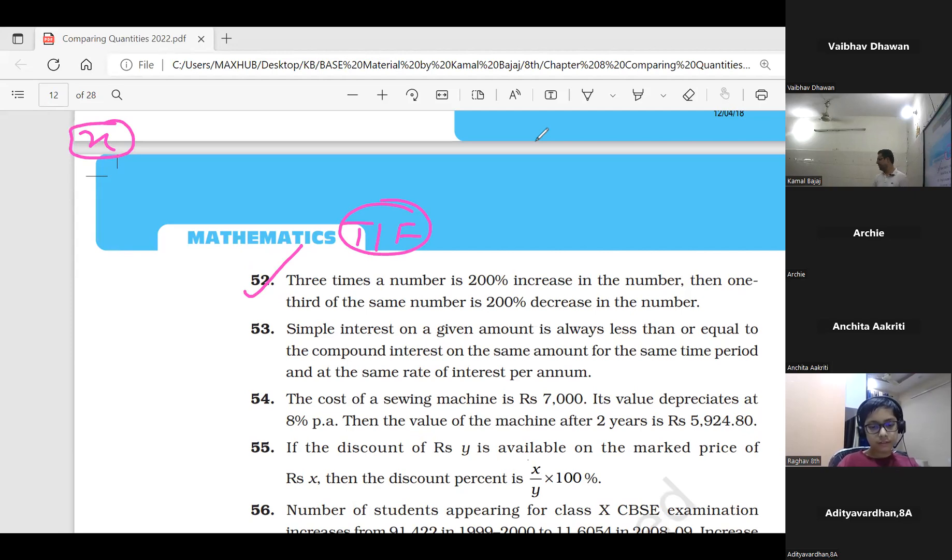Then three times x will be 3x, so the change in the number is 2x. What is the percentage change? It's 2x divided by x times 100, which equals 200%.